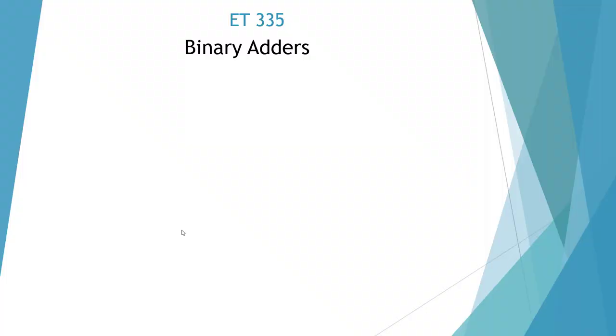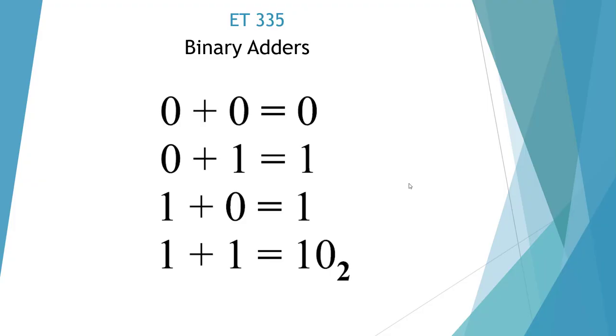Welcome to the ET335 binary adders lecture video. In binary adders, we only have two numbers: 0 and 1. Once it exceeds 1, we have to carry the digit just like we do in decimal addition. So when we go from 0, 1 to 2, 2 becomes 10 base 2.